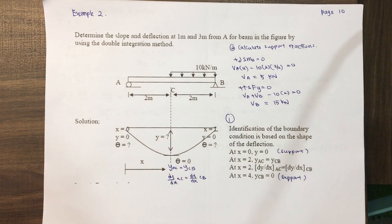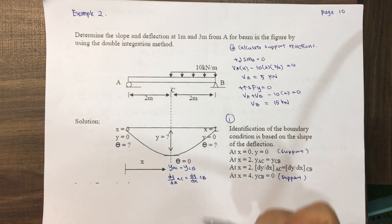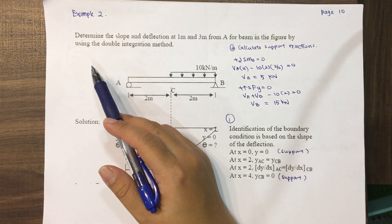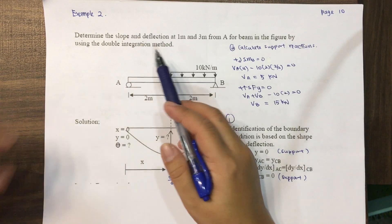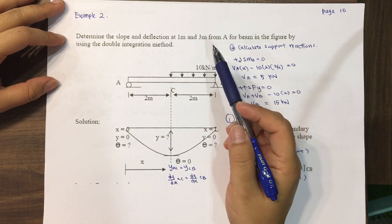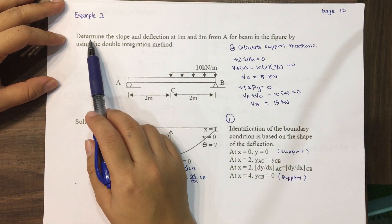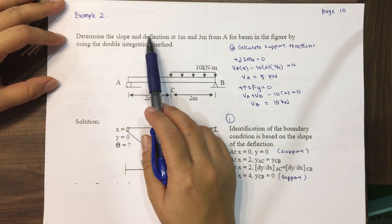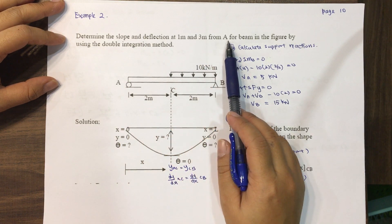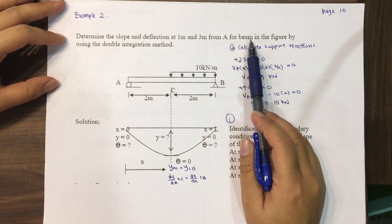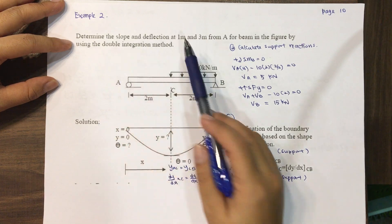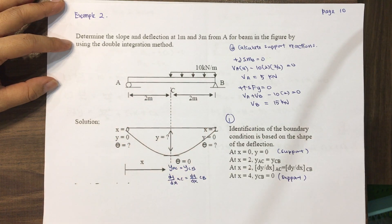So everyone, this is Example 2. We will use the double integration method. The question asks us to determine the slope and deflection at 1 meter and 3 meters from A for the beam shown in the figure, using the double integration method.